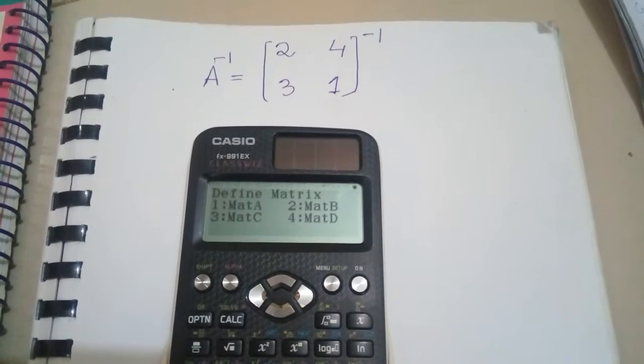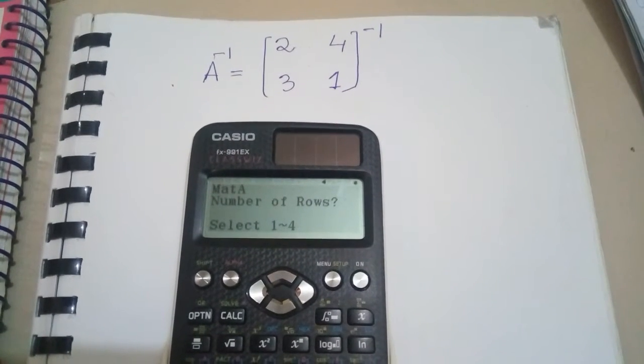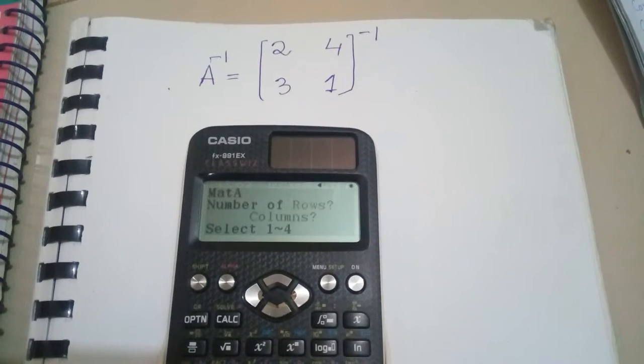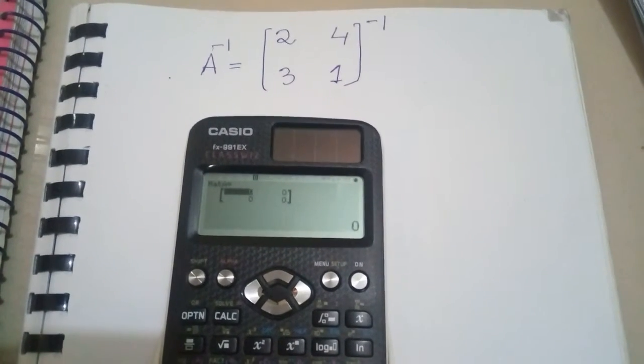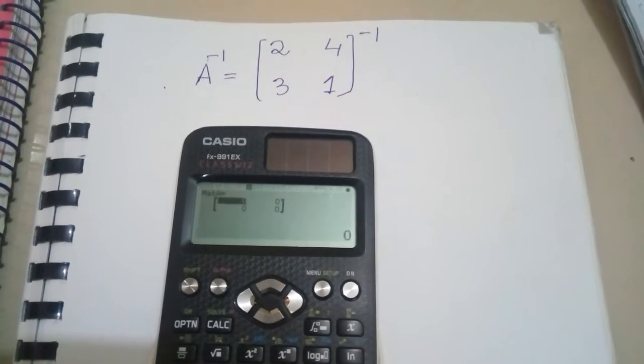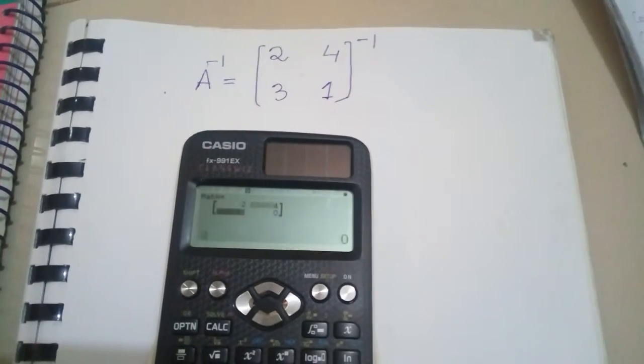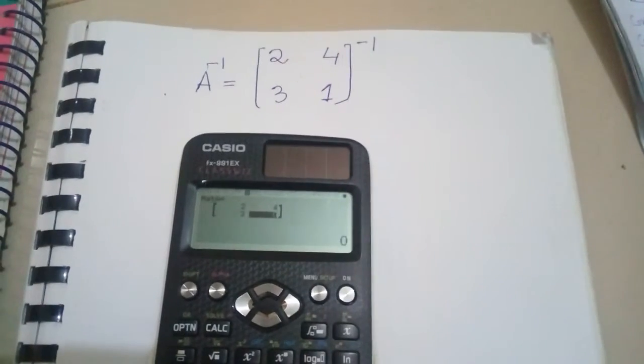Now we have to use matrix A, so press 1. The number of rows is 2, so press 2. The number of columns is 2, so press 2 again. Now fill in the matrix: 2 equals, 4 equals, 3 equals, 1 equals. We have entered all the entries.